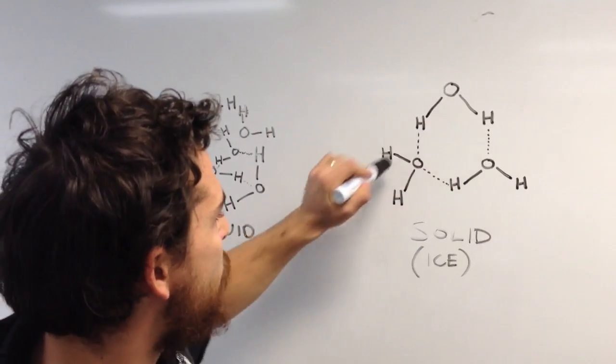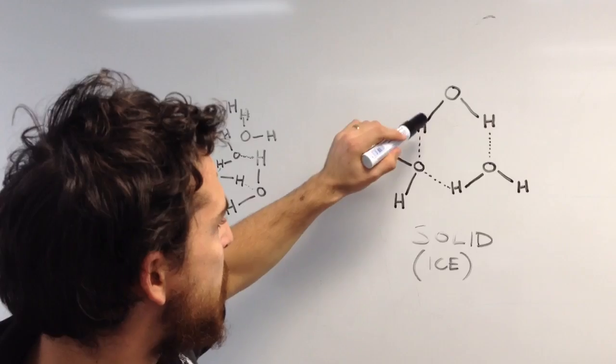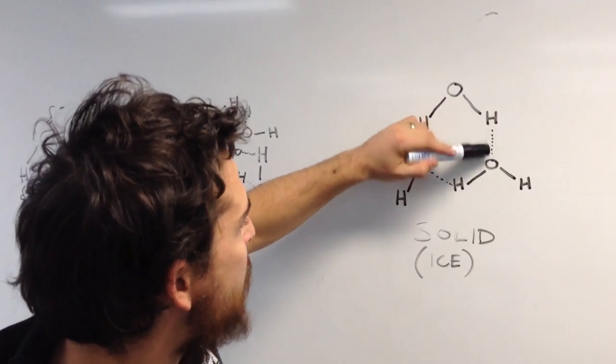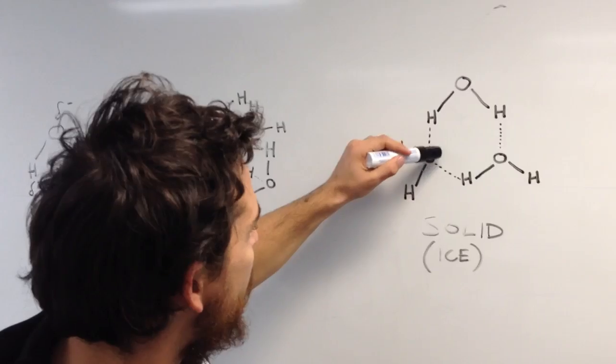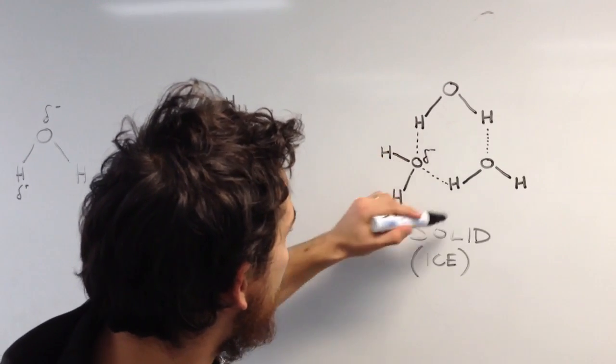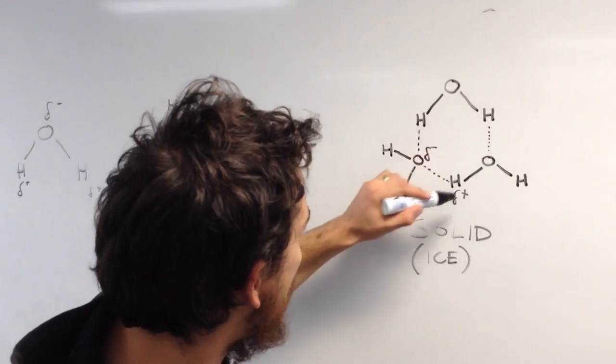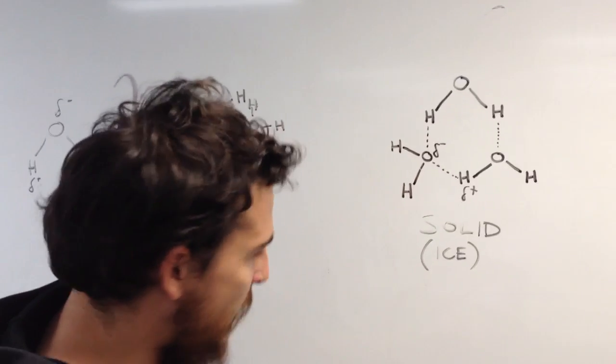So we've got like 1, 2, 3 water molecules here and they have this slight hydrogen bonding between one molecule and another molecule because this is slightly negative. So we'll put that in. That's slightly negative and this one here is slightly positive. So they like to attract each other.